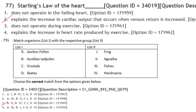Starling's law of the heart: it does not explain the increase in heart rate produced by exercise, but it does explain the increase in cardiac output that occurs when venous return is increased. Option 2 is correct.